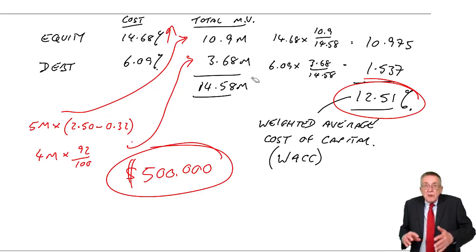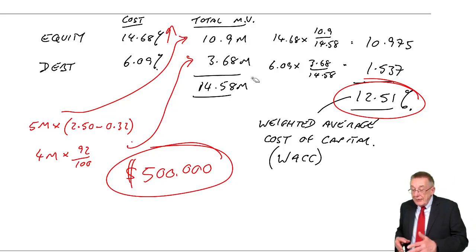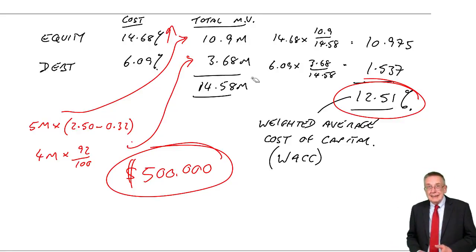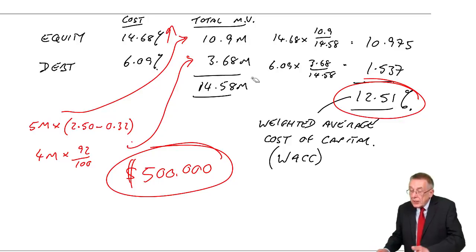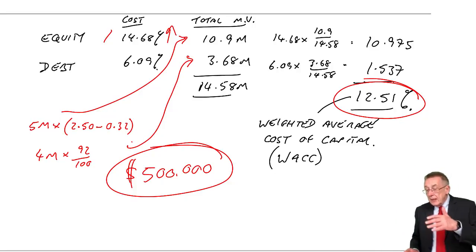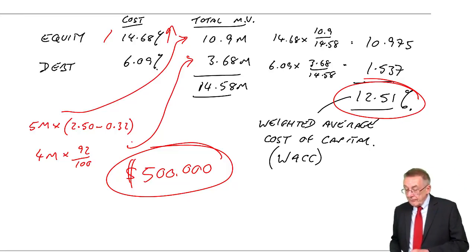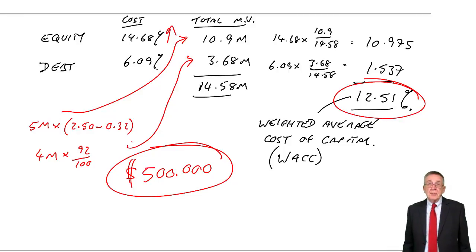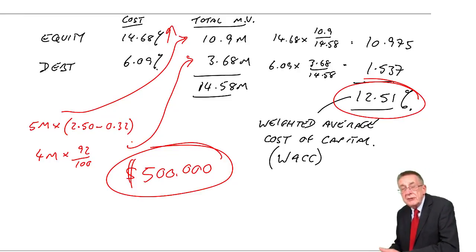But there is problem number one. That depending how you raise the money, if it changes the gearing, it's going to change the cost of the borrowing. You know, raise the money all equity. Oh, 14.68. But no, because if you raise it all equity, the gearing would be reduced. There's less risk to shareholders. And it's likely to cost less. But that's one problem. The weighted average cost of capital stands to change as the gearing changes. And we want to know what the cost of this extra 500 is.